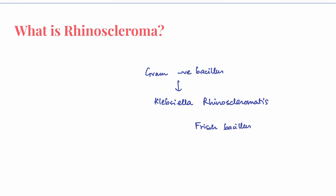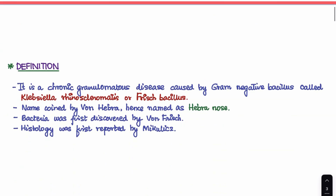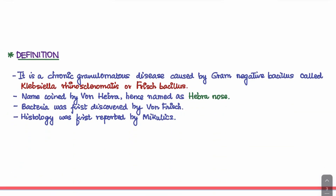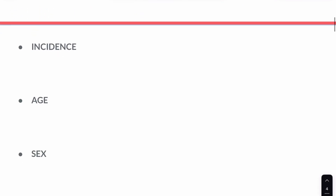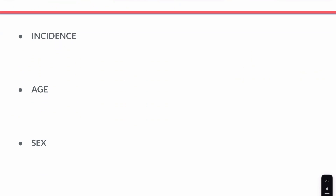Rhinoscleroma is a chronic granulomatous disease of the nose caused by Klebsiella rhinoscleromatis, also known as the Frisch bacillus. This name was given by a person known as von Hebra, and hence the typical feature seen in this disease came to be termed as 'Hebra nose' after von Hebra.